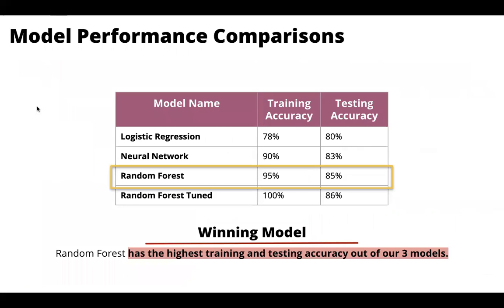So comparing all the models that we turned out, we think that the winning model would be our first random forest model with a 95 percent accuracy rate and 85 percent testing accuracy for the results.